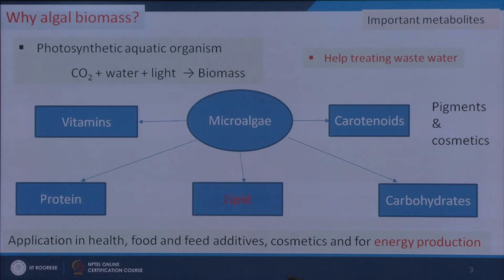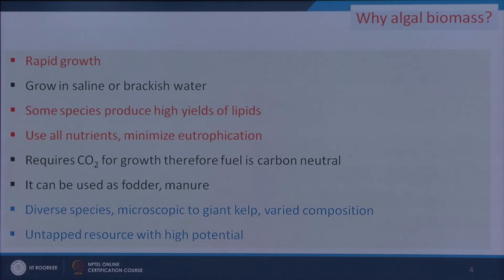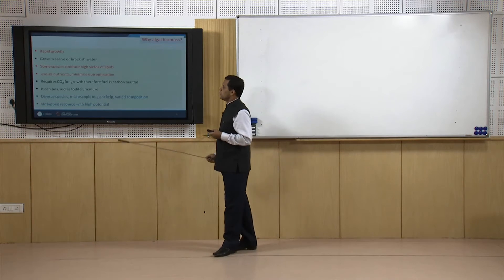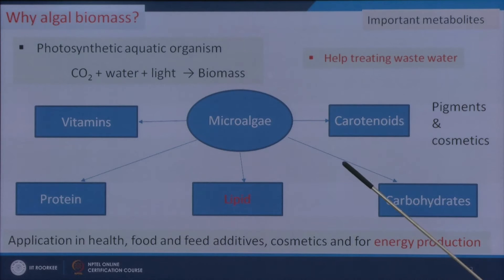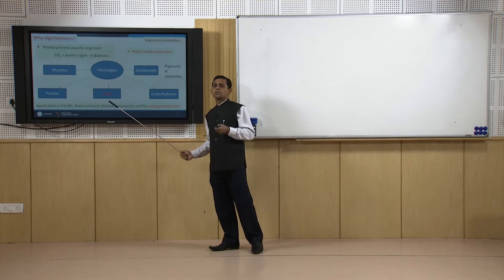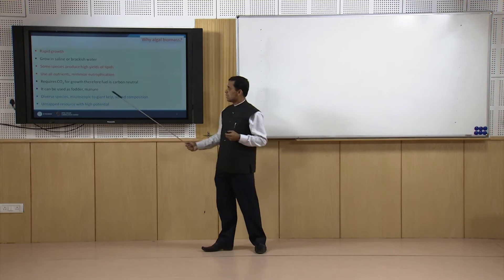Some other factors guide us to develop more algae. Algal growth is very rapid, so it requires less land area for production of a certain amount of algae compared to other plants. Algae can grow in saline and brackish water — both seawater and freshwater — and some species produce high yields of lipids. Some species have very high lipid content, making those species more suitable for energy production. Algae also use all nutrients and minimize eutrophication, helping wastewater treatment, and require CO2 for growth, making the fuel carbon neutral. It can also be used as fodder and manure.